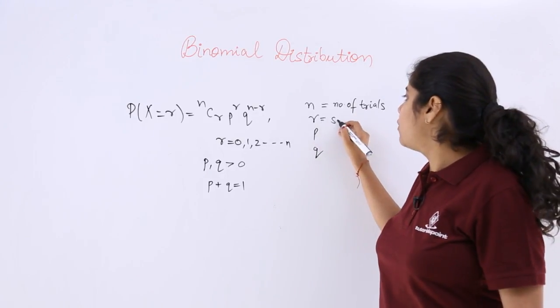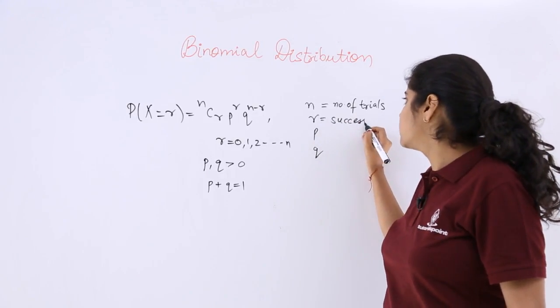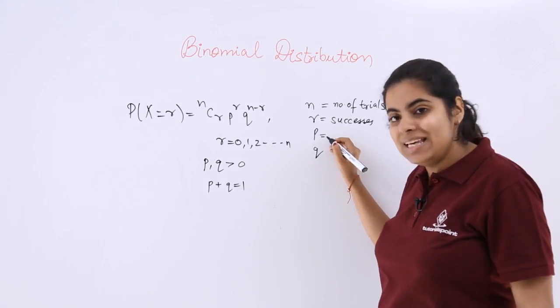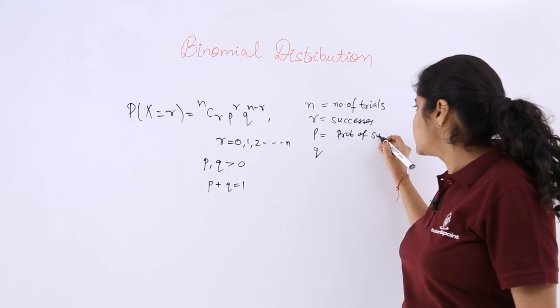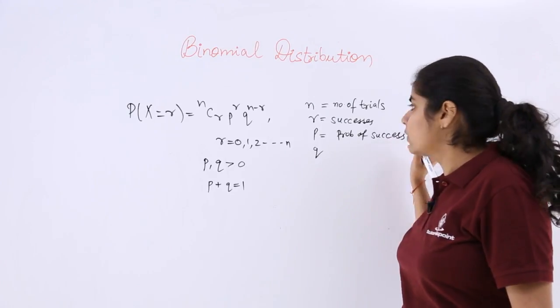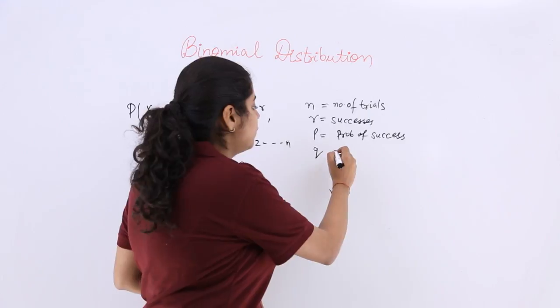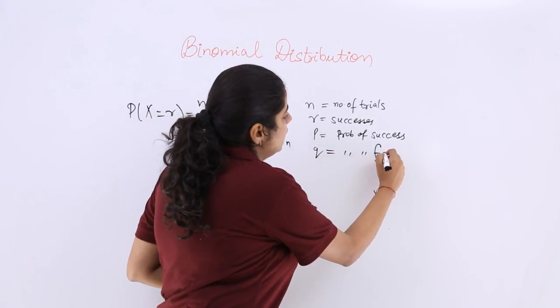r is the number of successes. p is the probability of success, and q is the probability of failure.